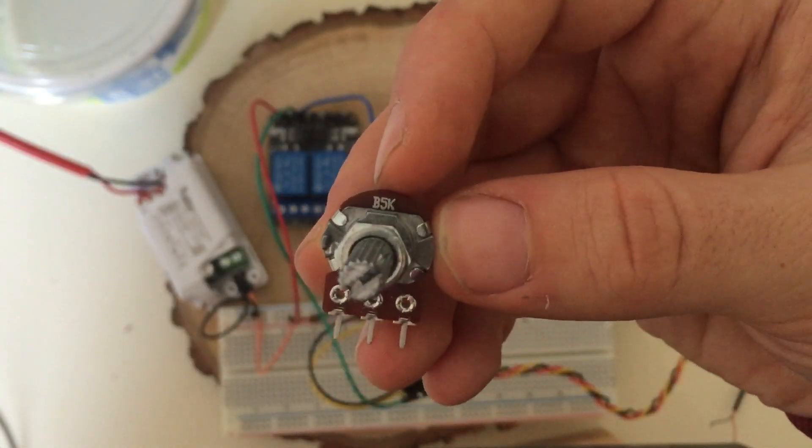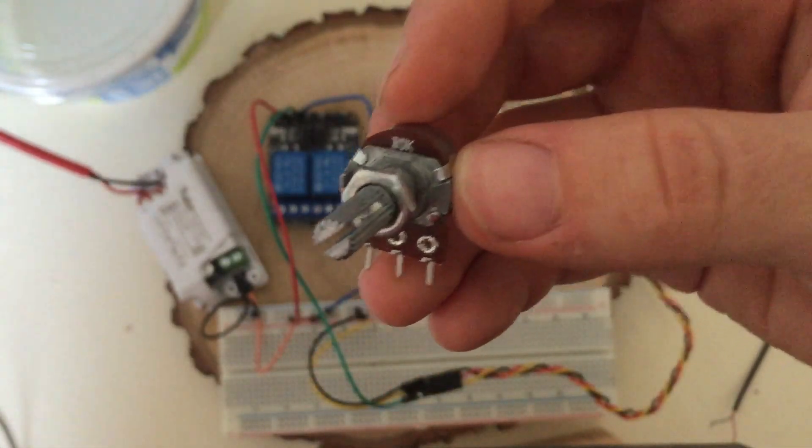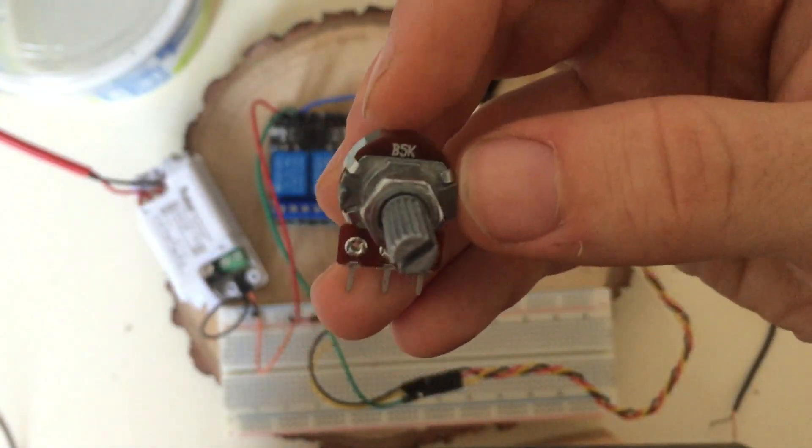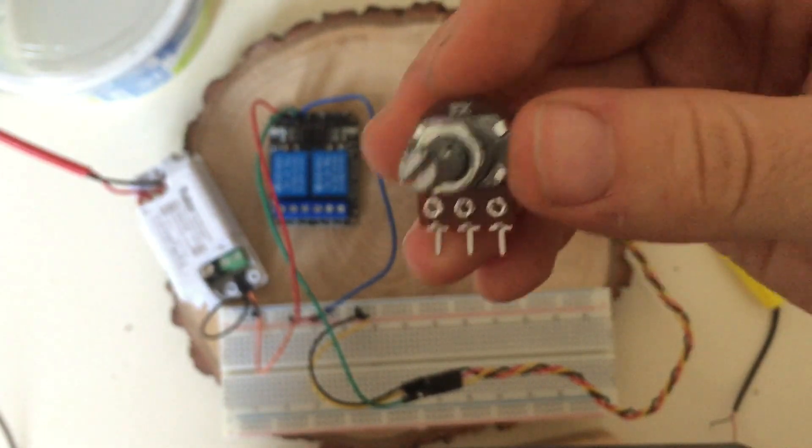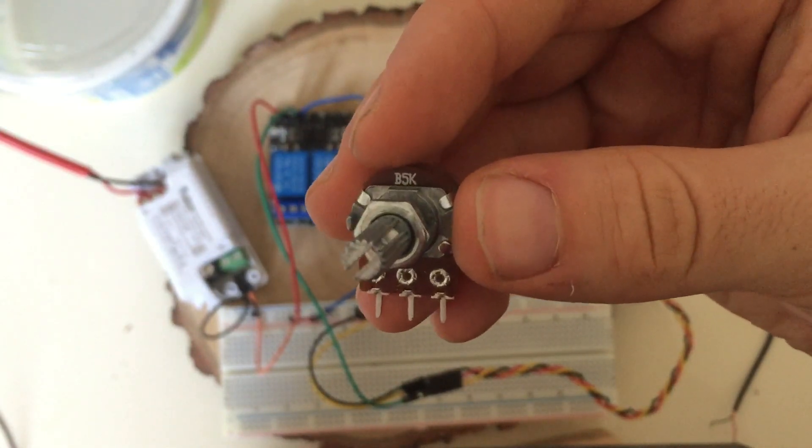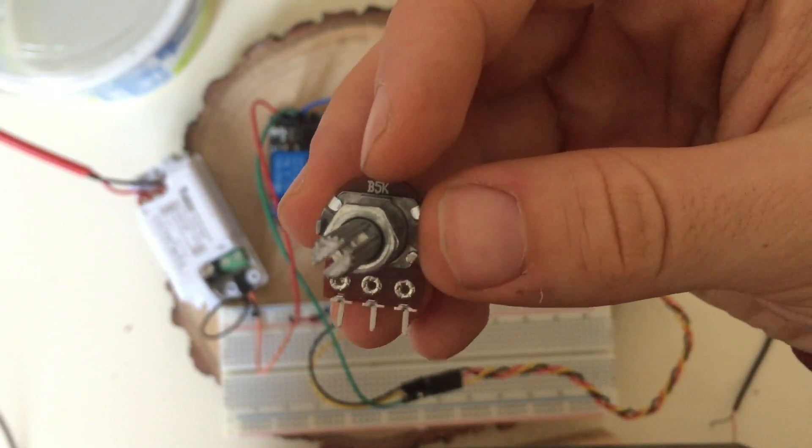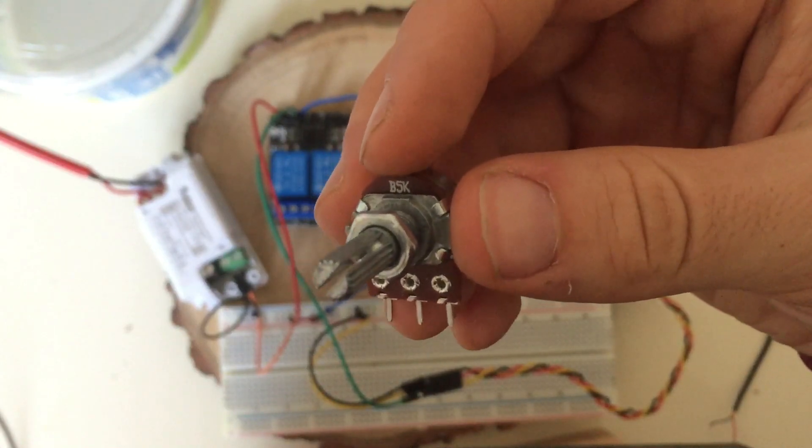Next I will place the potentiometer to the breadboard. As you see this is a 5kOhm pot. I am using this because I currently have this readily but I recommend you to use 1kOhm at most to make a more sensitive adjustment. Let's place it.